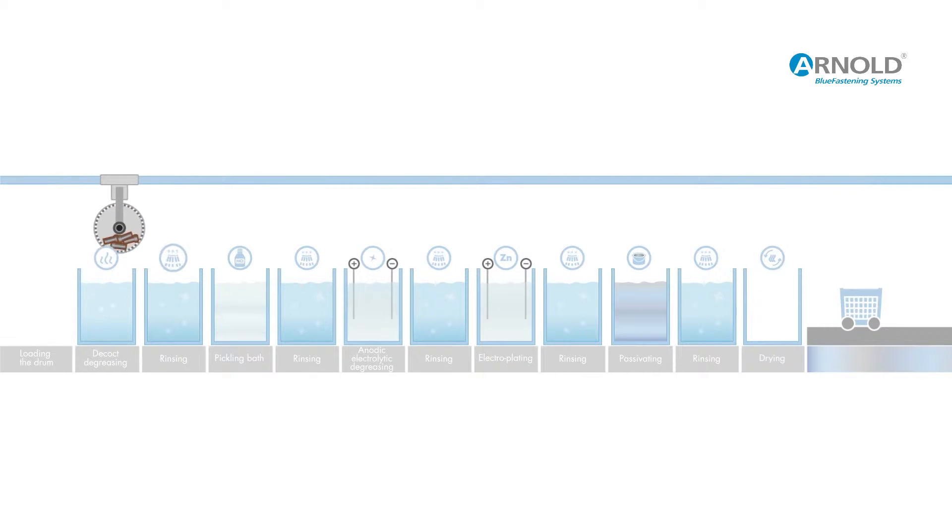Now the items are rinsed and then they move on into the pickling bath. This is where we remove oxide layers, such as rust and scale, so as to produce a bright metallic surface.